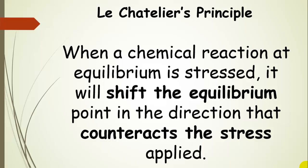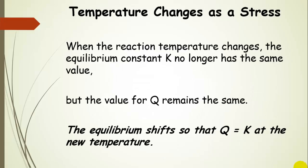So how does this apply to temperature changes? Temperature changes are a stress on the system. When we change the reaction temperature, the equilibrium constant K no longer has the same value. Remember, the equilibrium constant is the ratio of the forward reaction rate constant divided by the reverse reaction rate constant. When we change the temperature, thinking back to the Arrhenius equation, K changes, but the value for Q that we calculate for that system remains the same. So the equilibrium is going to shift so that Q equals K at the new temperature.